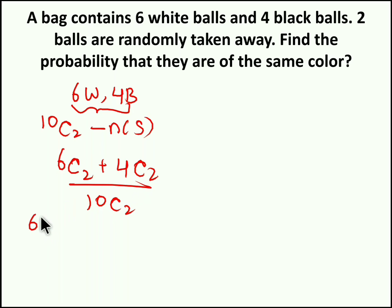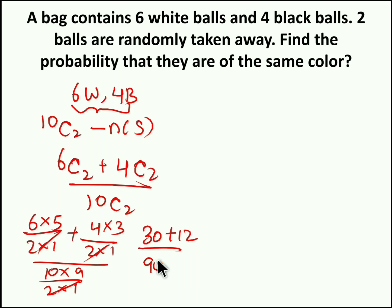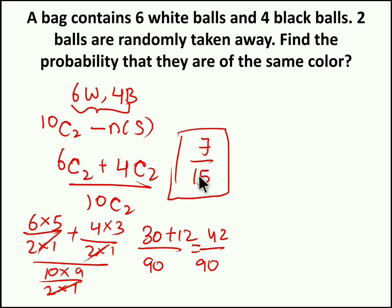6C2 = 6×5 / (2×1) = 15, plus 4C2 = 4×3 / (2×1) = 6, giving 30 + 12 = 42 in the numerator. 10C2 = 10×9 / (2×1) = 45. So 42/90 simplifies to 7/15. Therefore 7/15 is the probability of choosing 2 same colour balls from 6 white and 4 black balls while taking 2 balls at random.